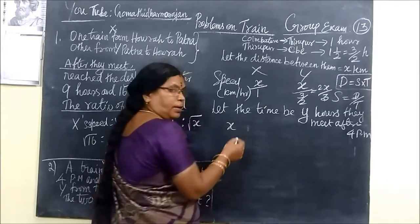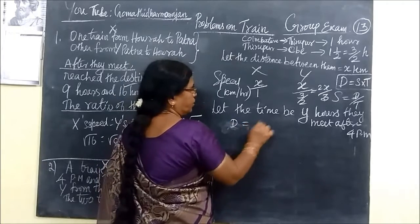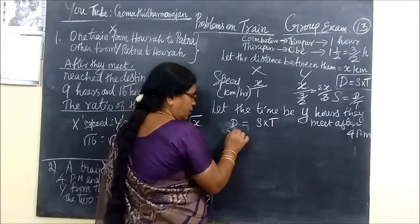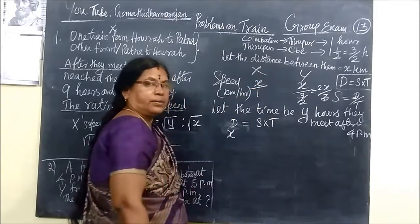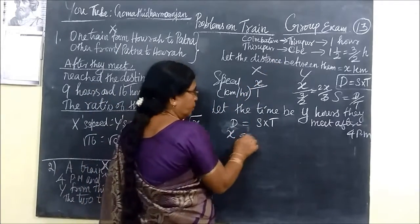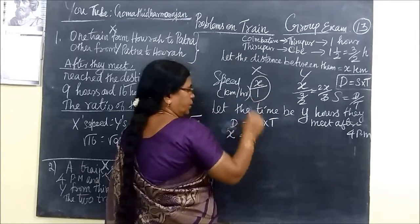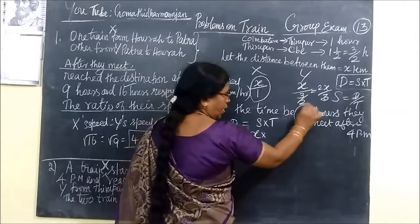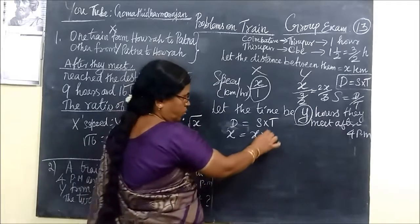X is distance. Distance equal to speed into time. Here the distance is X. The distance is X. Now the distance is X. If I in the speed one. The first thing is in the speed. So speed is into time is what? Time taken is Y. So you write Y.